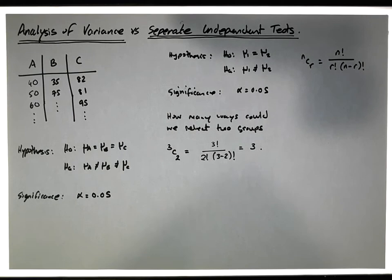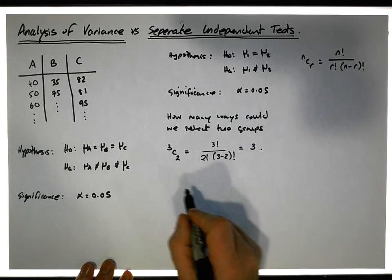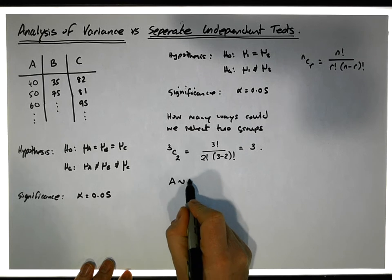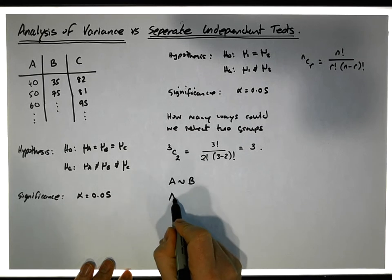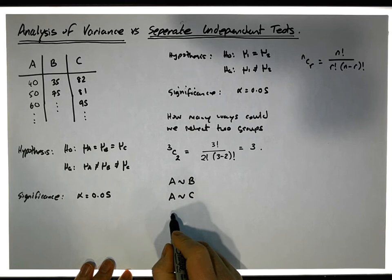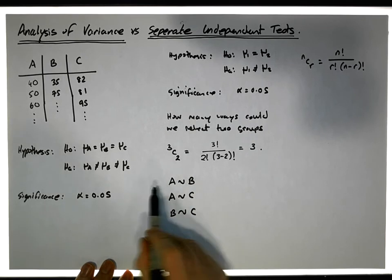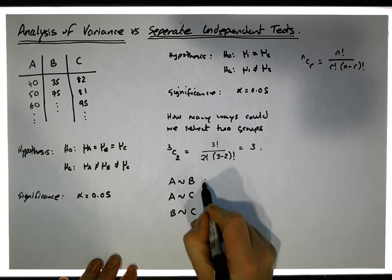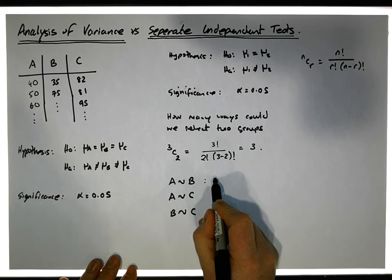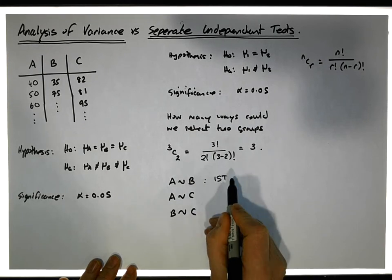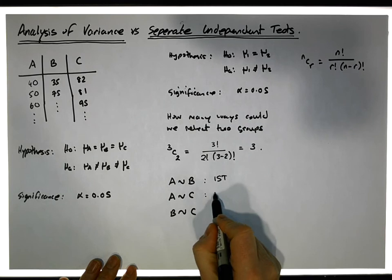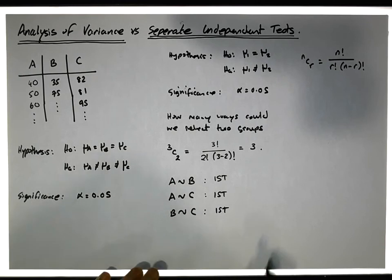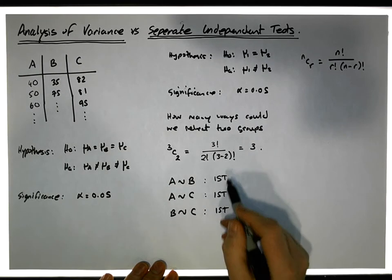Specifically, the pairings we could test are: group A compared to group B, group A compared to group C, and group B compared to group C. Those are the three possible pairings. So technically, we could undertake an independent samples t-test for each one of these three pairings.